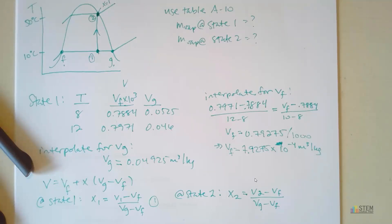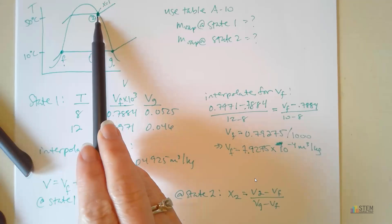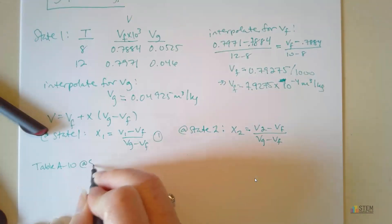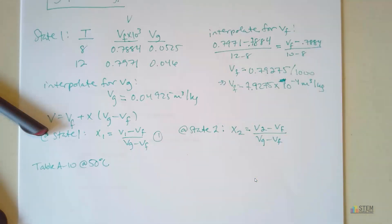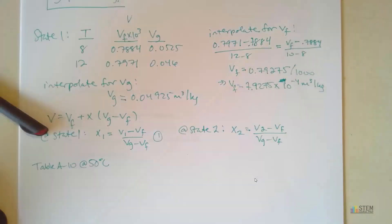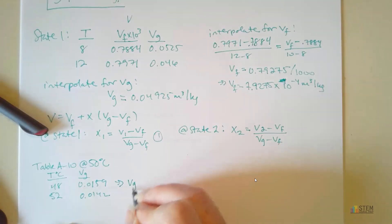And we're going to start out with finding V2. V2 is right here, that's at that G point, because we had 100% vapor. So let's go ahead, and we're going to start with that. So we're going to go to the table again. This time, we've got a temperature of 50 degrees Celsius. And you're going to find that you have to interpolate again. We've got 48 and 52 here, so 50 is missing. So at a temperature of 48, VG was 0.0159. 52 was 0.0142. So when you interpolate, you get VG, which is 0.01505 cubic meters per kilogram.